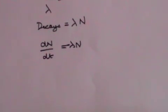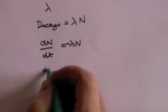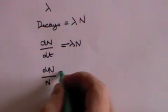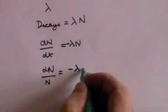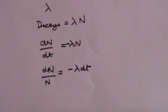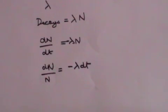We can rearrange this formula to read that dN over N equals minus lambda dt. Now if we integrate both sides,